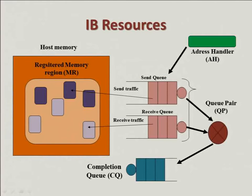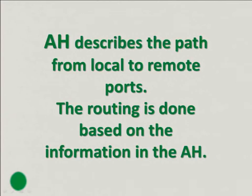We can see blocks already written with data on the send queue, and on the receive queue we put blank memory blocks to fill with data we receive. The last resource is the address handler, which describes the path from a local to a remote port — routing is done based on the information in the address handler. Whenever I want to connect to a remote node, I need to know the path to it, so I keep this information in the address handler. I can save this address handler in the QP context, or I can save it on the task.